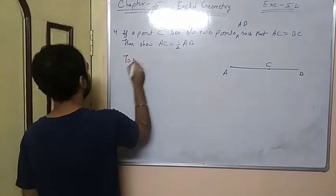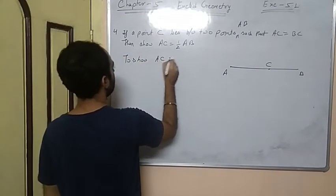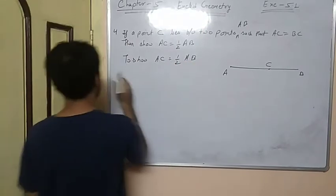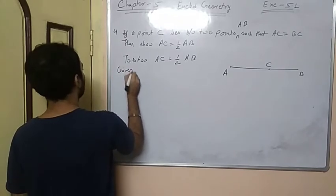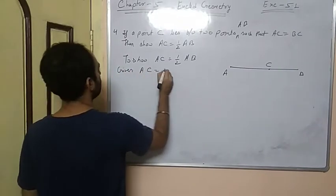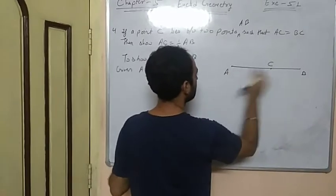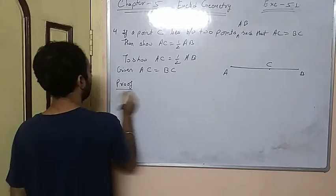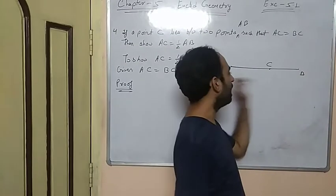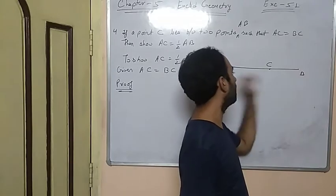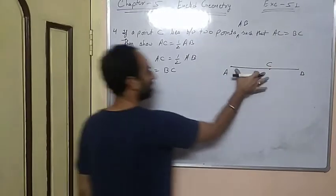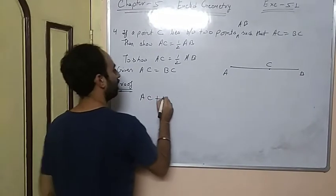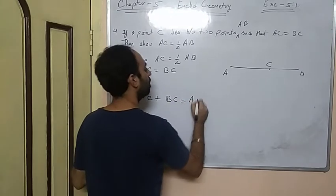So that is very simple. It is AC equals to 1 by 2 of AB. Given: AC equals to BC. And we know that AC plus BC equals to AB.